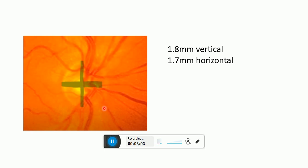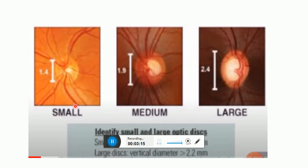Hence high myopes typically have large scleral canals and large discs, while high hyperopes have small scleral canals and small discs. Small discs are less than 1.5 mm, large disc more than 2.2 mm. There is also inter-individual variability.